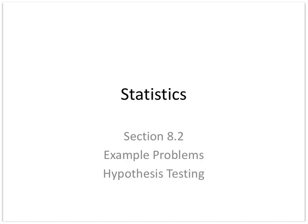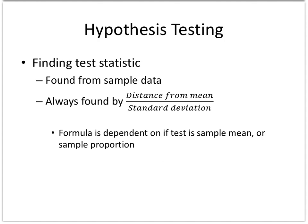Let's look at some examples in this section, first understanding how to find the test statistic. Whenever you find a test statistic, it's always found from the sample data. You always find it by taking the distance from the mean, or if it's a proportion from the proportion, and divide by the formula for the standard deviation.